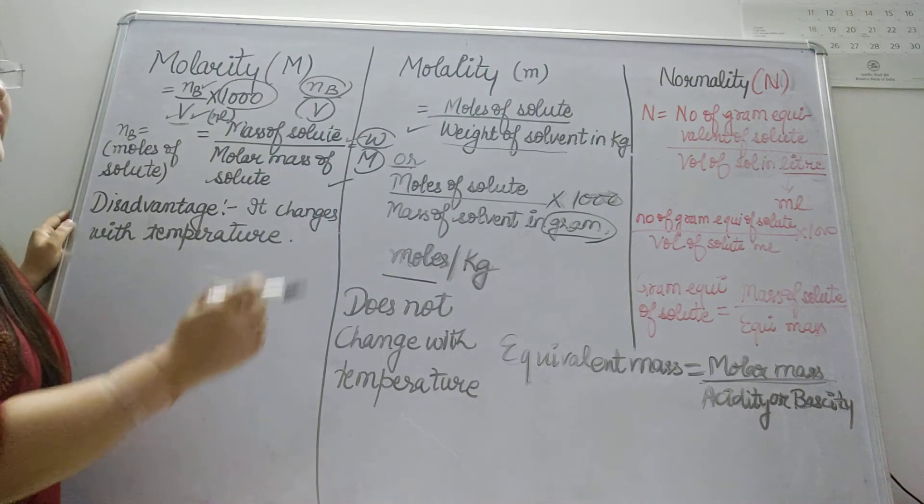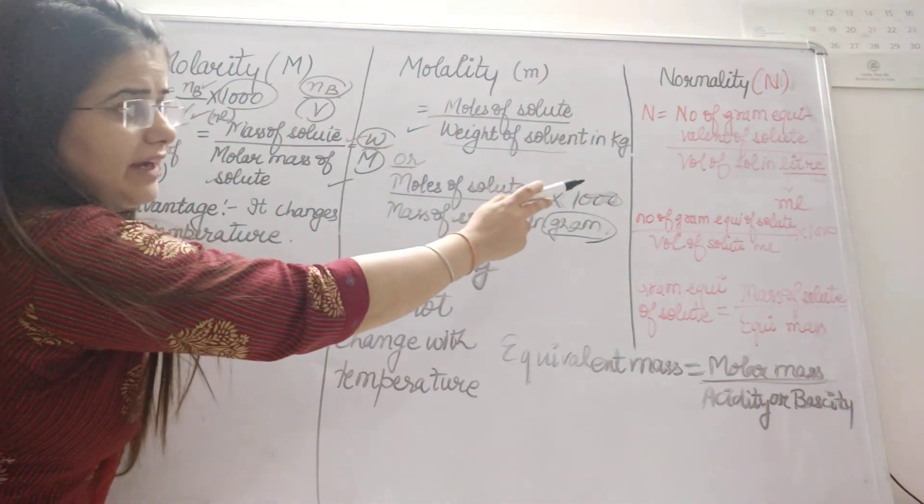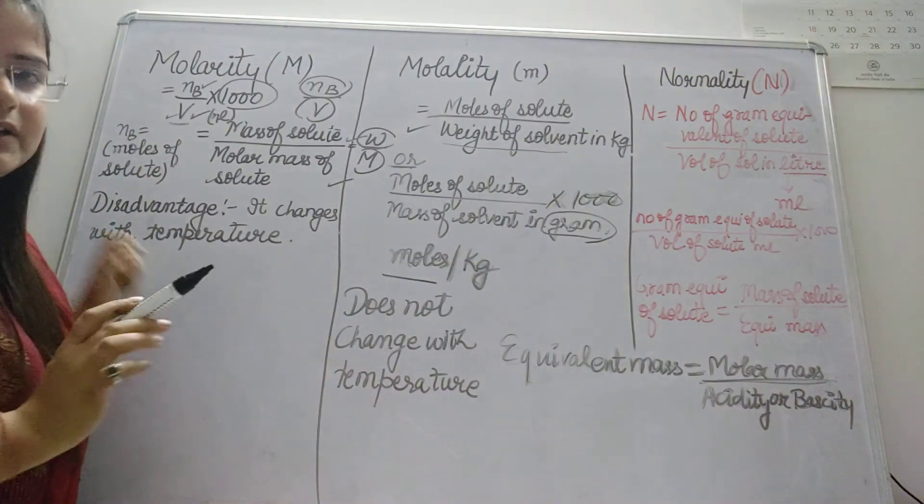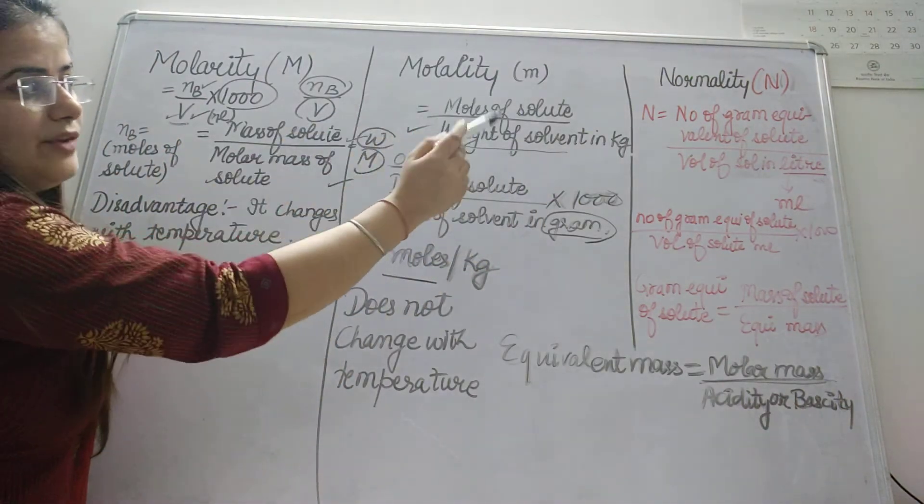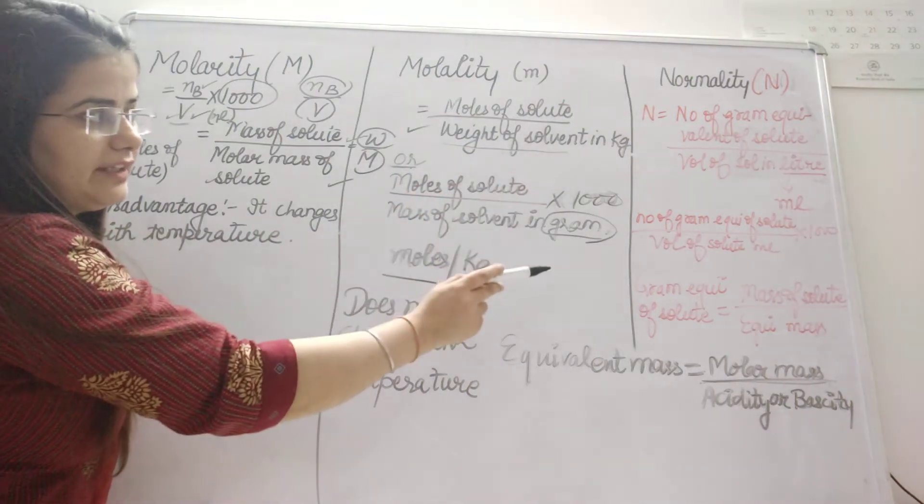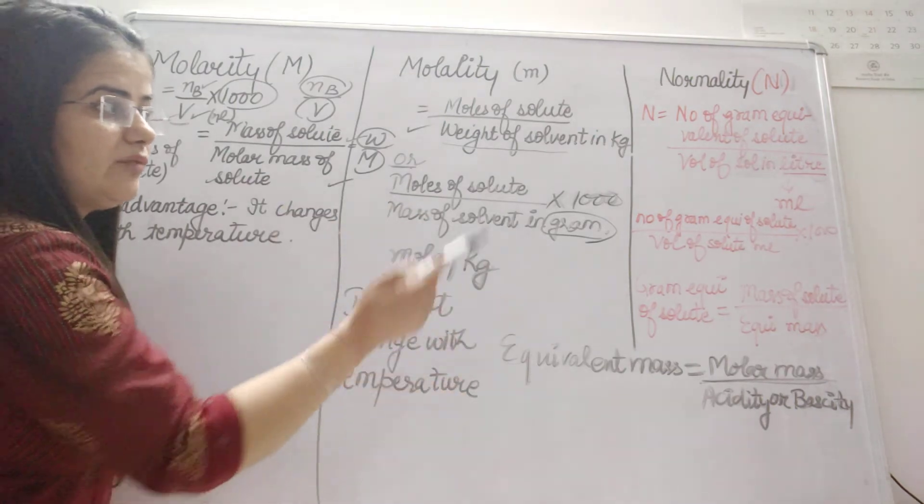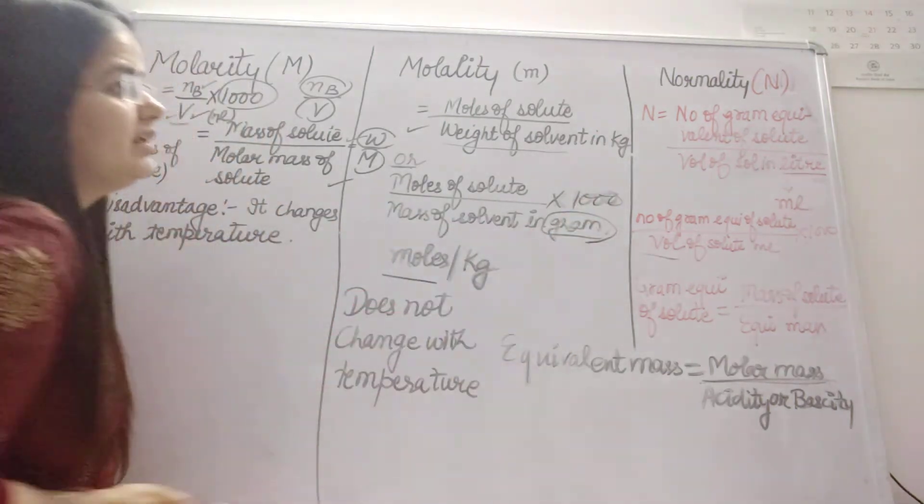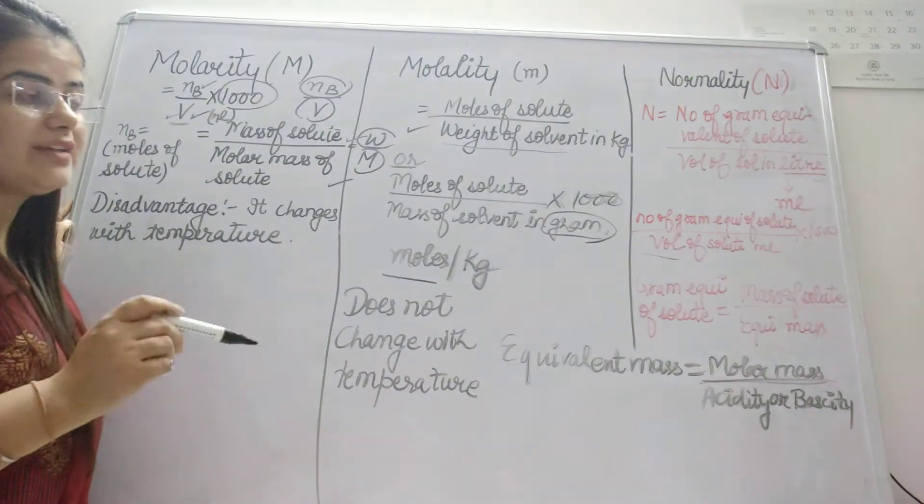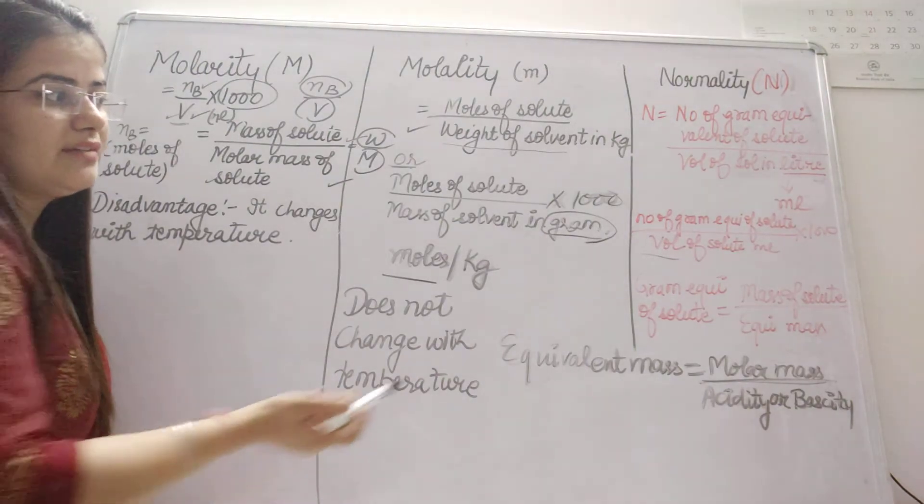If you go with normality, it is number of gram equivalents of solute divided by volume of solution in liters. But if the volume of solution is given in milliliters, you will multiply that with 1000. Now you must know what is gram equivalent of solute.